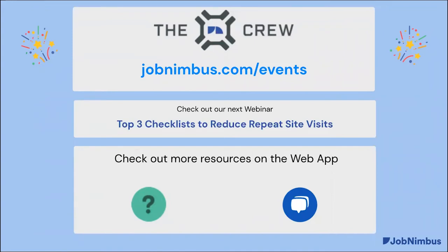If you want to learn more about the Android app, we're going to keep this going. Next week we're talking about checklists and forms in the mobile app — how you can fill those out once you get to the job. We'll especially cover the top three checklists you should be using in your company to help reduce your site visits. In the web app, you'll see two buttons in the bottom corners: the question mark in the left corner pops up resources, notifications, and announcements.